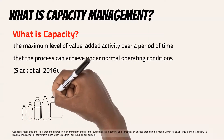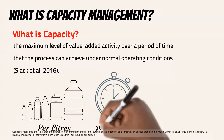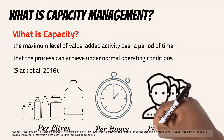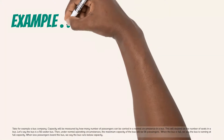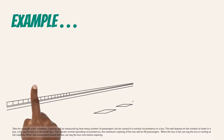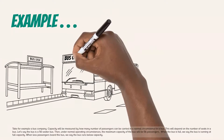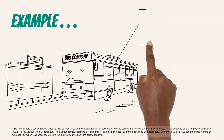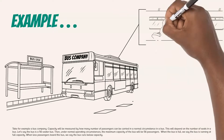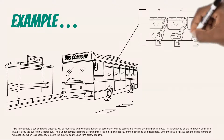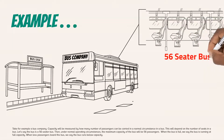Capacity measures the rate that the operation can transform inputs into outputs, or the quantity of a product or service that can be made within a given time period. Capacity is usually measured in convenient units such as liters per hour or per person. Take for example a bus company. Capacity will be measured by how many passengers can be carried in a normal circumstance. This will depend on the number of seats — say the bus is a 56-seater. Then under normal operating circumstances, the maximum capacity will be 56 passengers. When the bus is full, we say it is running at full capacity; when less passengers board, we say it runs below capacity.